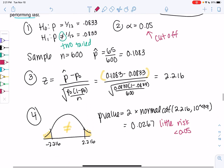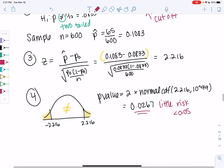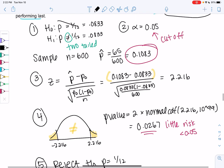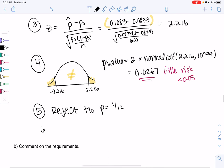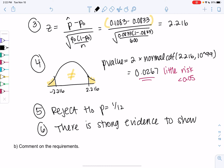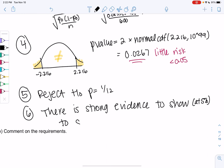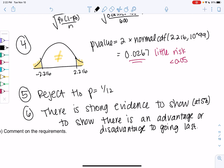If people truly, if there is no advantage or disadvantage to going last, there's only a 2% chance we'd get a sample this high. So it's more likely that there is an advantage or disadvantage. So we're going to go ahead and reject H0. We're rejecting that p equals 1/12. So we're saying it doesn't equal 1/12. So there must be an advantage or disadvantage. So there is strong evidence to show, and I usually say at 5% just so someone would know our cutoff. If you ever look at scientific studies, they'll state what their alpha was to show there is an advantage or disadvantage to going last. We haven't proved which one yet, but we know that one of them.